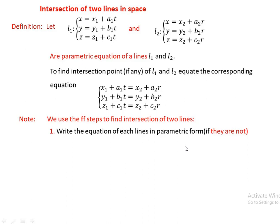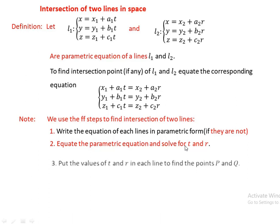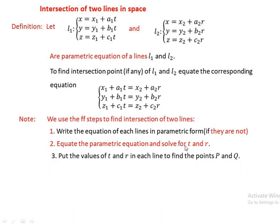We equate the parametric equations to solve for t and r. Each parametric equation will be set equal, forming a system. Then we put the values of t and r back into each line equation to find the points P and Q.